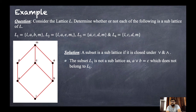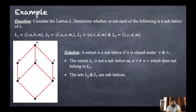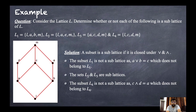For L3 = {a, c, d, m}: consider a and c — LUB is c, GLB is a; both are in the set. For c and d — GLB is a and LUB is m; both are in the set. For d and m — both are in the set. You can verify all pairs similarly, and the GLB and LUB will always be in the set, so L3 IS a sublattice. L2 is also a sublattice by similar reasoning.